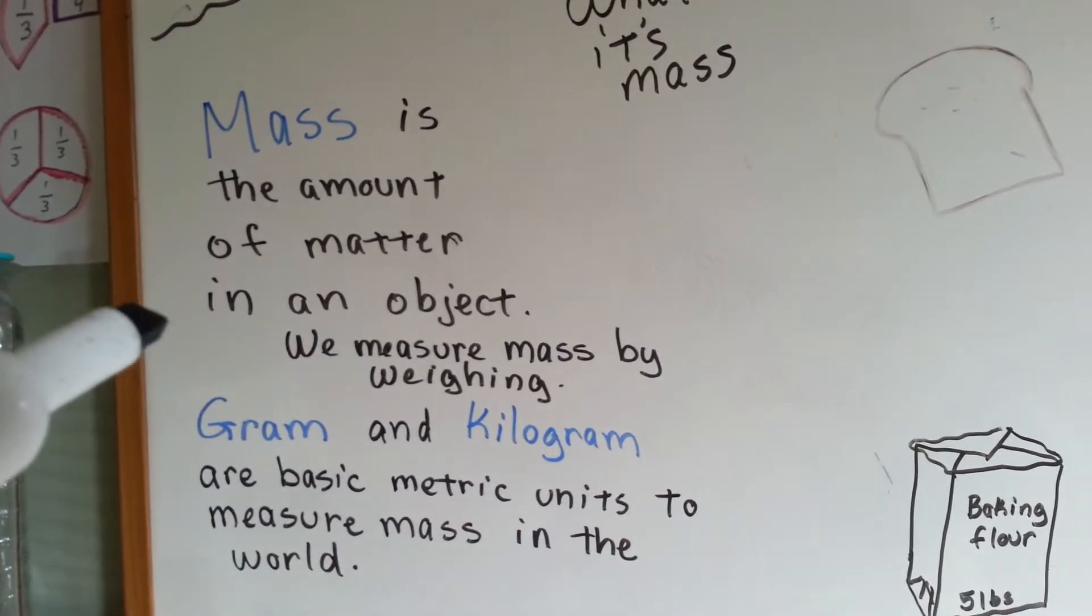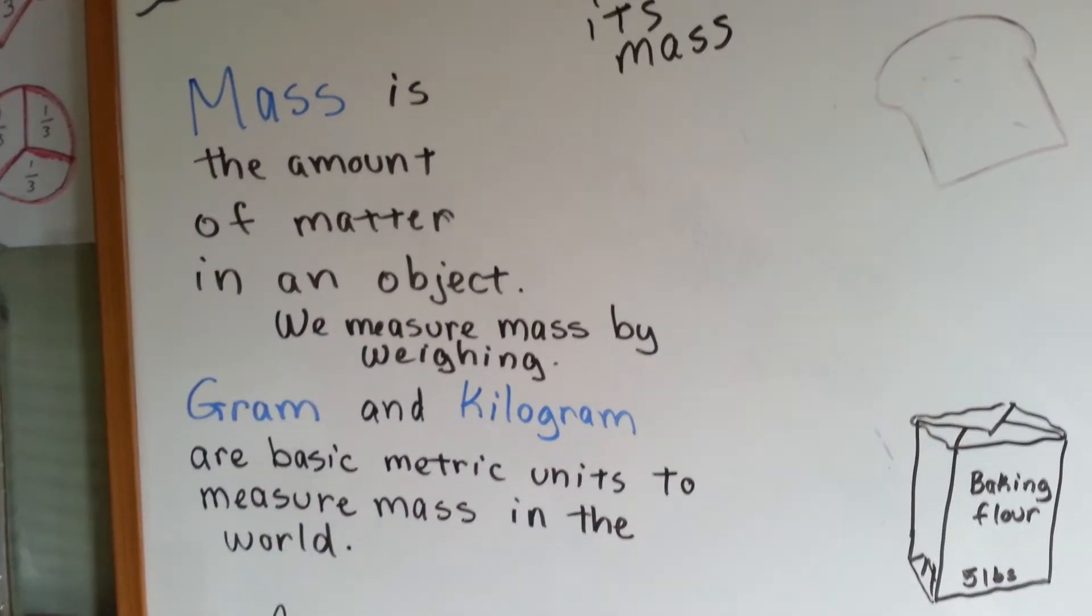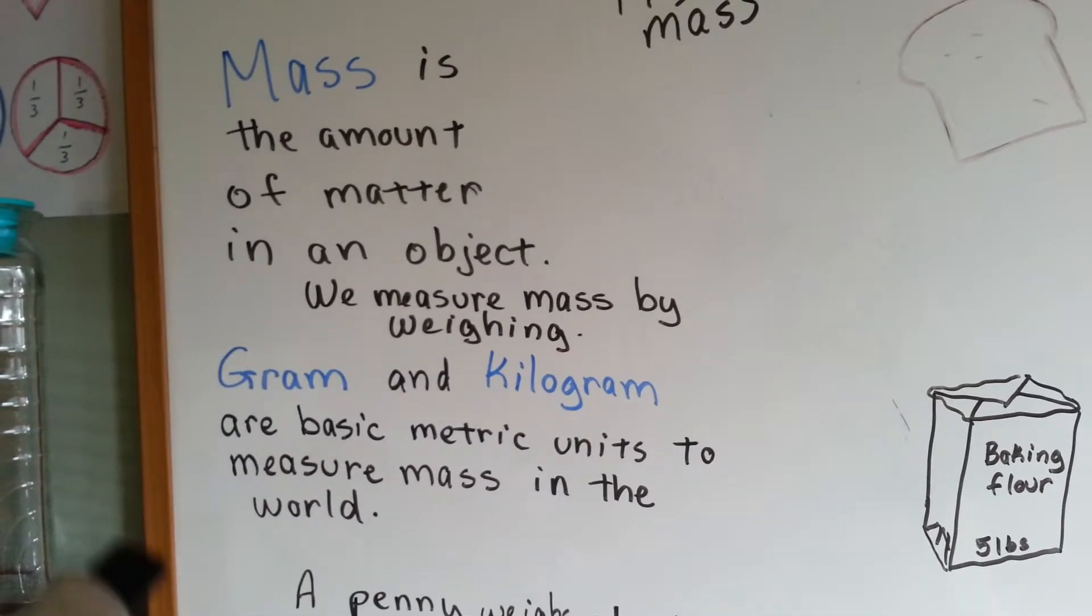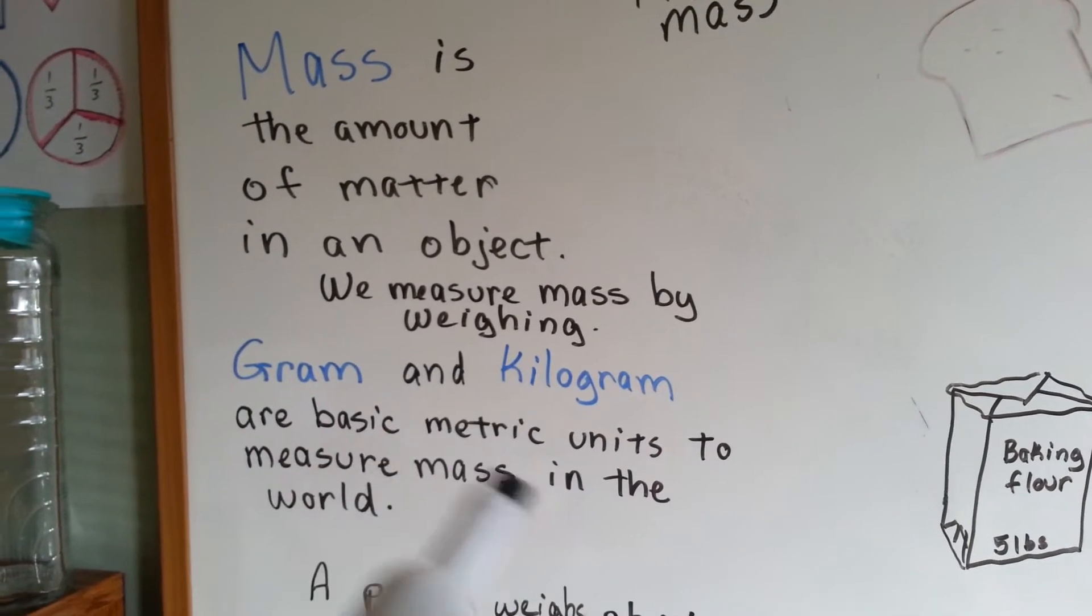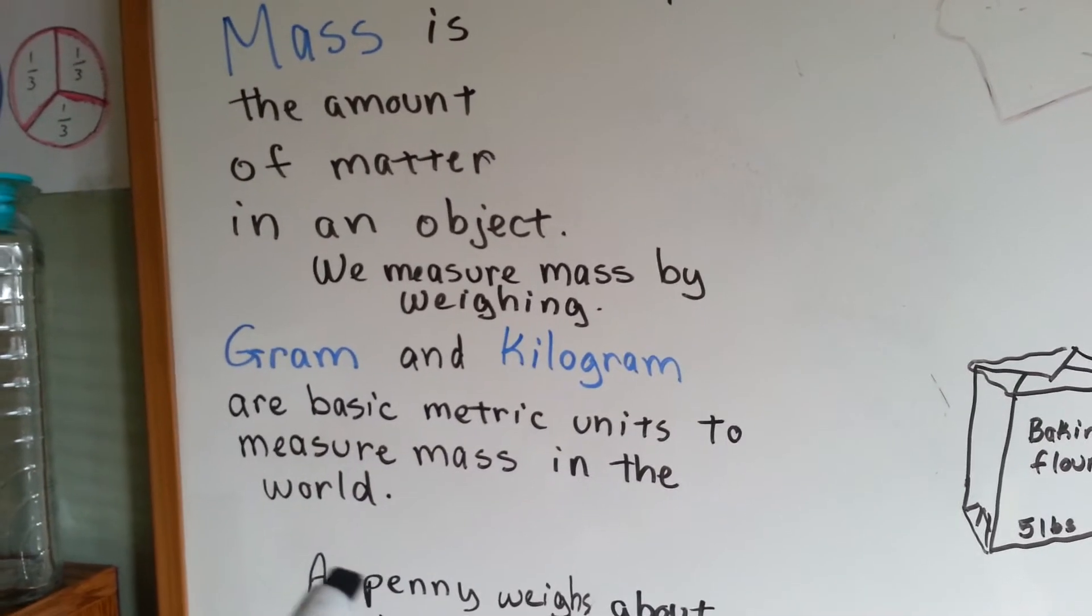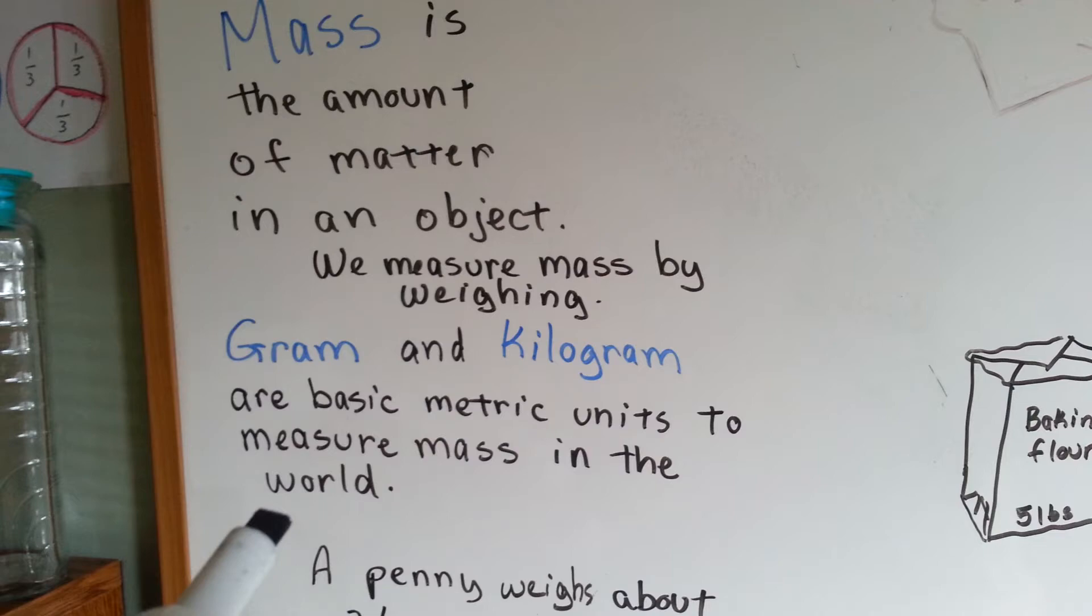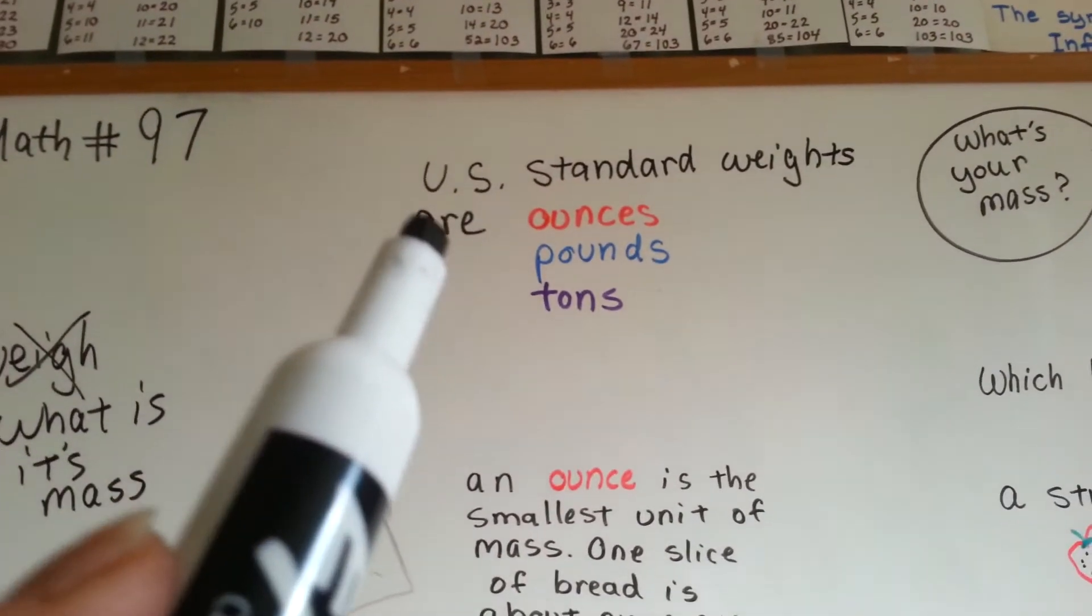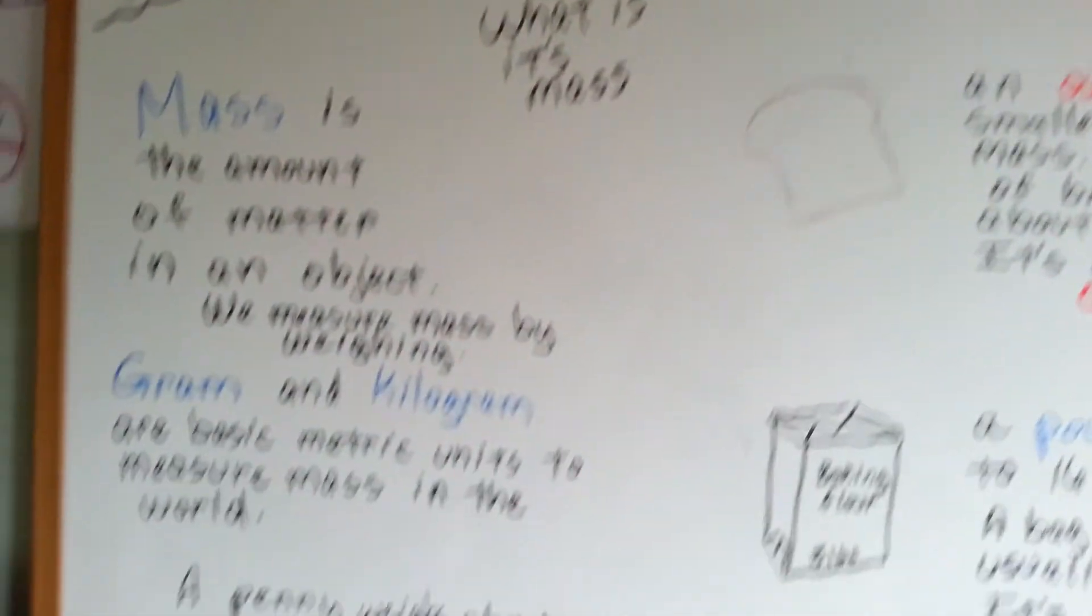Mass is the amount of matter in an object. A gram is a basic metric unit to measure, and a kilogram is also a metric unit to measure, and they use it all over the world. It's part of the metric system. But in the U.S., we use U.S. standard weights.